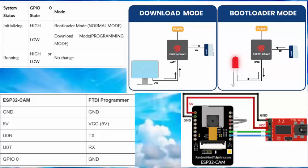Now that we know about the two booting modes in ESP32CAM, let us understand how to switch the ESP32CAM module into bootloader mode and download mode. The ESP32CAM module enters different boot modes during power-up based on the status of its GPIO0 pin. If the GPIO0 pin is high, connected to 3.3 volts, the module enters bootloader mode. If the pin is low, connected to ground, it enters download mode.